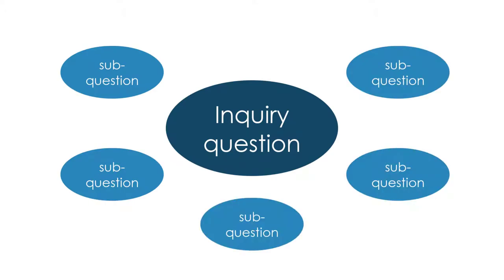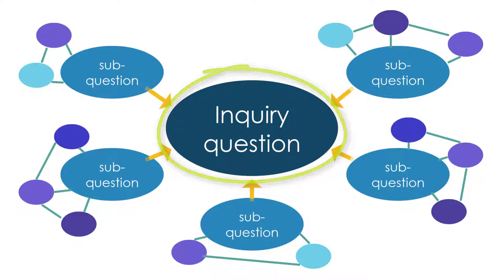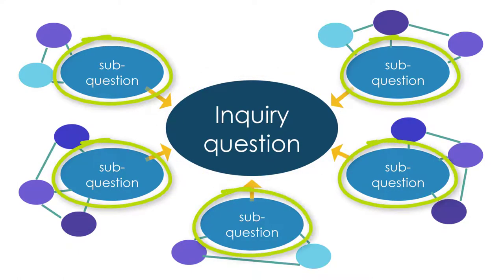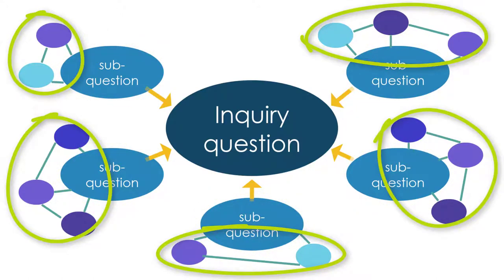You may have seen this graphic in previous workshops or online resources. The central bubble is meant to represent your overall research or inquiry question. The additional bubbles represent sub-questions. Your research is an attempt to answer each sub-question as a way to answer your central inquiry question. Finally, the smallest dots represent sources that you have found that partially answer each sub-question. We'll talk more later about the role of sources in your paper's structure when we talk about rhetorical moves.